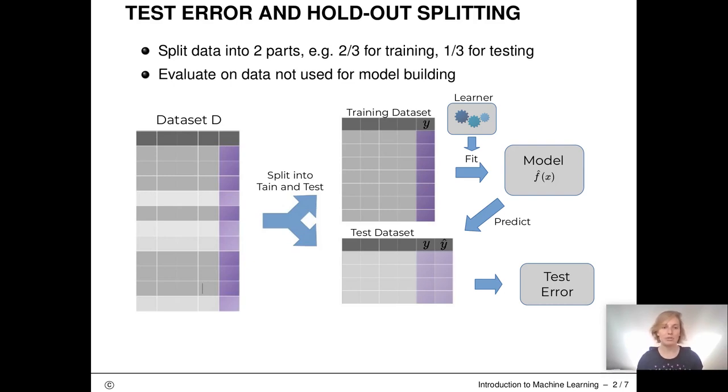We use the training data for training only and we use the test data for testing only. This way we do not get the problem as in the training error where we support overfitting. The test error will be able to detect overfitting issues.